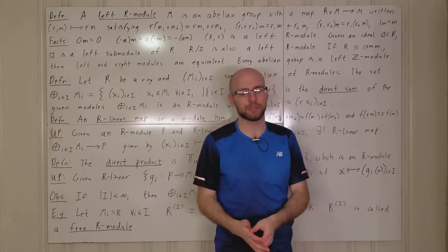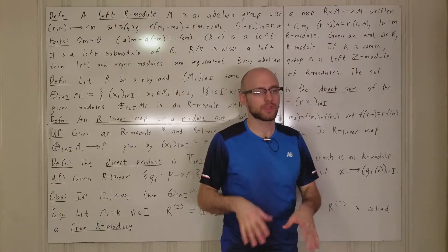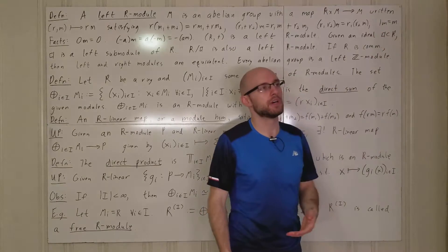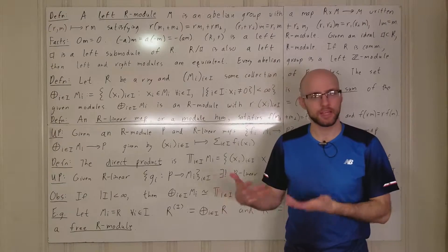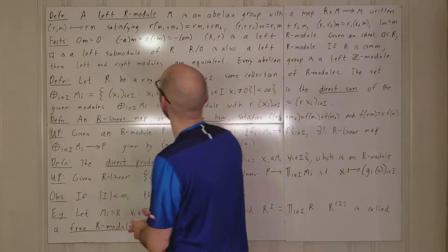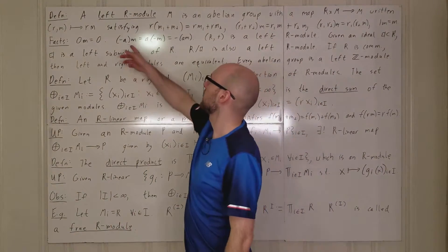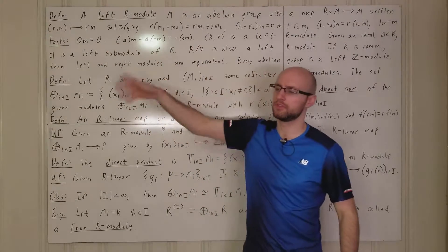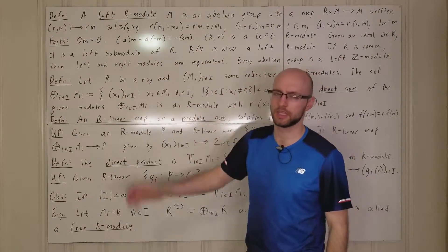You have to include in your definition that 1·m = m. This happens a lot — the definition involves one, but you're automatically able to conclude things about zero, and negative signs move around. It's just some symbol pushing; it's not too hard.